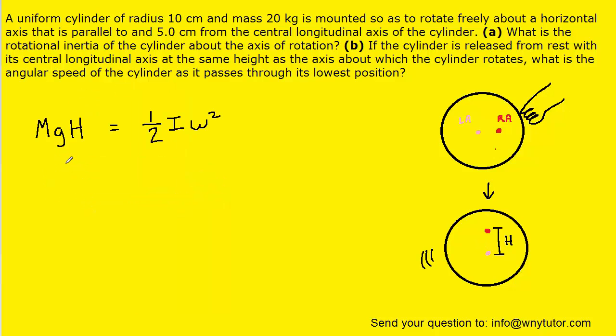So initially the cylinder begins at rest, and therefore the only energy present is the gravitational potential energy. But then when the cylinder is released, it's now rotating, and so it's going to end up with rotational kinetic energy. What we're looking for is the angular speed of the cylinder. So we're going to solve this equation for omega. We'll multiply both sides of the equation by 2. We'll divide by the rotational inertia, and then take the square root. And that's going to give us omega.